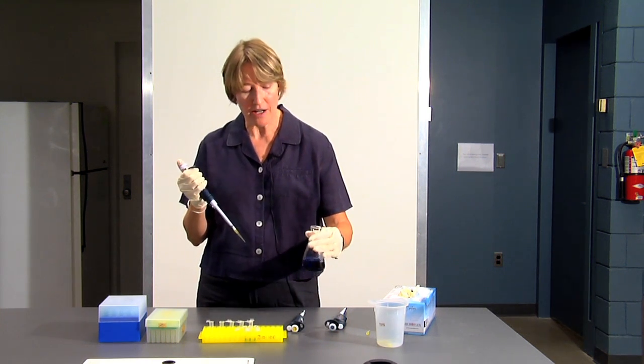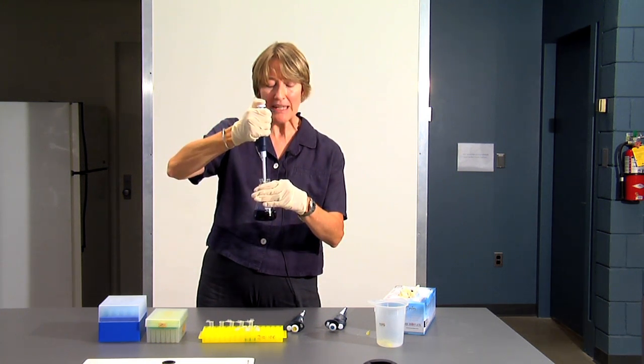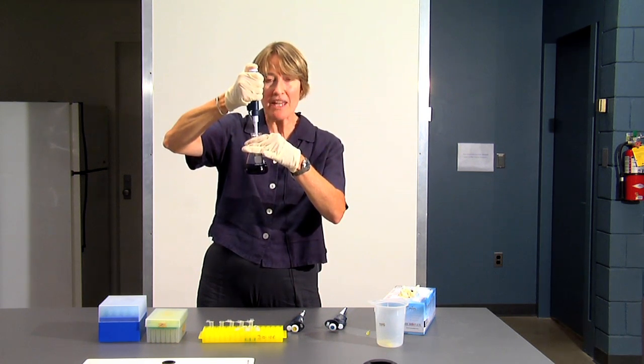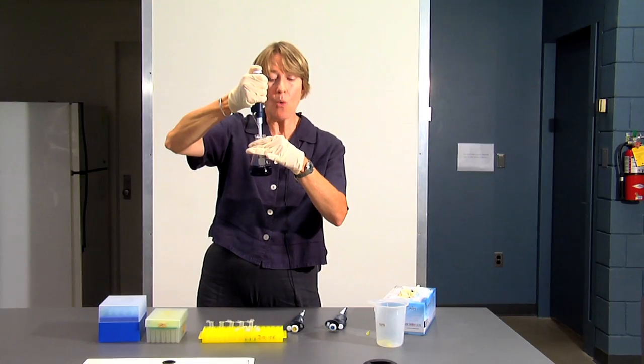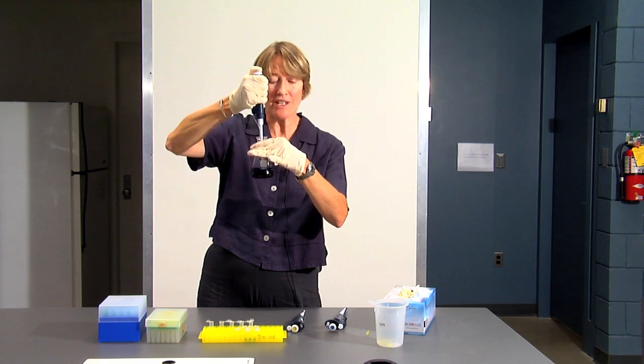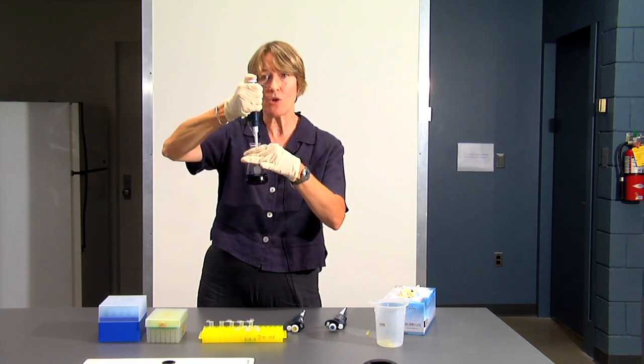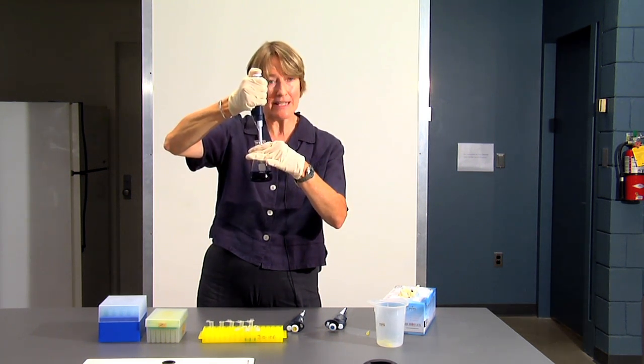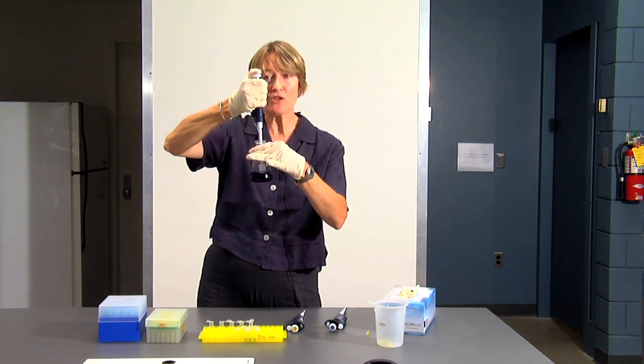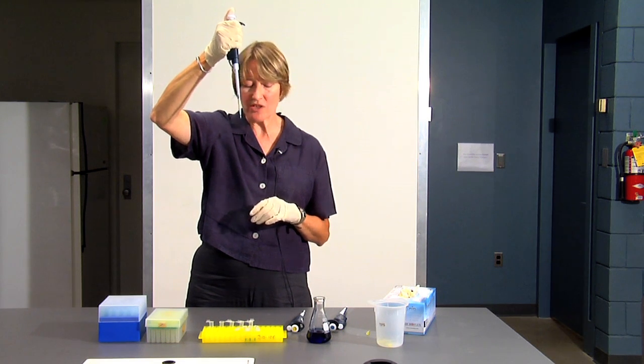So we're going to take some of our sample. You're going to depress the plunger to the first stop, put the pipette tip into the fluid, and you want to make sure that your tip is below the surface of the fluid, well below the surface of the fluid. You don't want to get the pipetter itself wet. You don't want it to go in too deep, but you want it to go in deep enough so that when you pull up the liquid into the tip you're not sucking up air. You don't want to get bubbles in the tip. So I pushed it down the plunger to the first stop. My pipette tip is under the surface of the fluid. I'm now going to slowly release the plunger and pull my sample up into my pipette tip. I now have 100 microliters of accurately measured sample in my pipette tip.